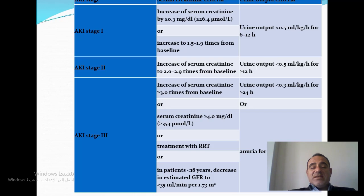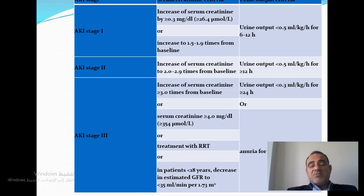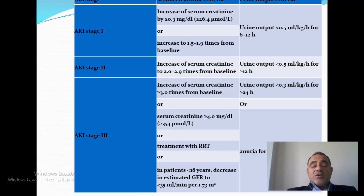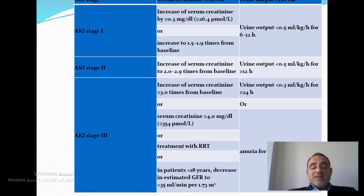Stage three is defined as a further increase in serum creatinine, or urine output decreasing to less than 0.3 mL/kg/hour for 24 hours, or anuria for 12 hours, meaning less than 100 cc of urine in 24 hours. Stage three also includes serum creatinine rising more than 4 mg/dL — equivalent to 354 micromol/L — or a patient requiring renal replacement therapy such as urgent dialysis. In patients under 18, a decrease in estimated GFR to less than 35 mL/minute is also included in stage three.